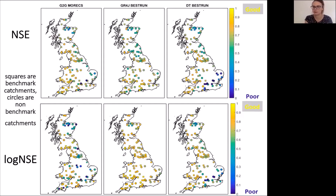The bottom panel shows log Nash-Sutcliffe efficiency, which is more focused on low flows. Overall the models are doing really well across a large proportion of the catchments in Great Britain, simulating a wide variability of hydrologic and climatic diversity and producing good simulations. However, there are a couple of key things to note from these plots.